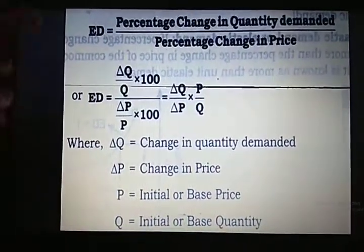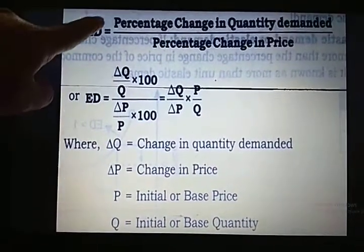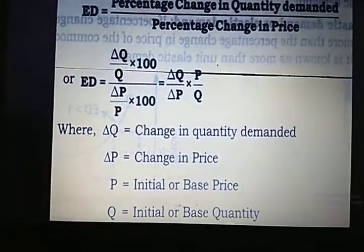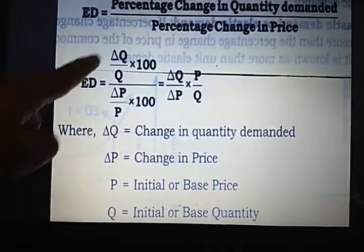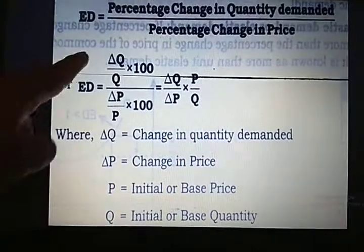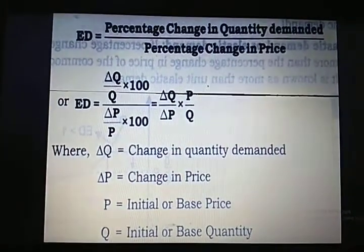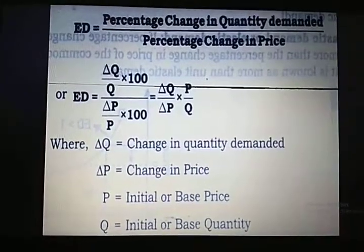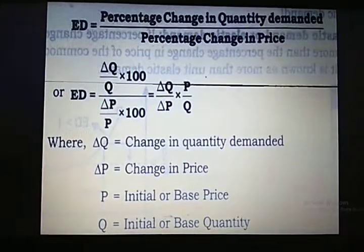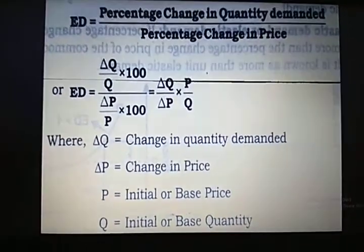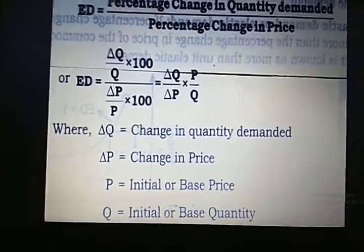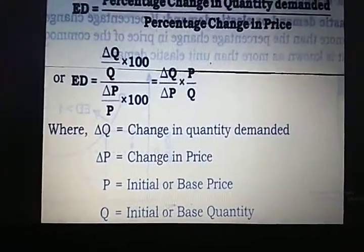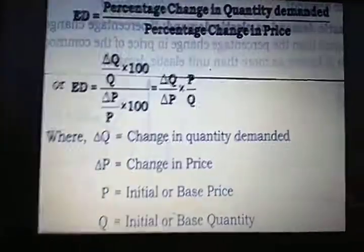The formula for percentage change in quantity demanded is delta Q upon Q into 100, and delta Q is equal to Q1 minus Q. Q1 is your new quantity, Q is your initial or base quantity, and delta Q is your change in quantity.